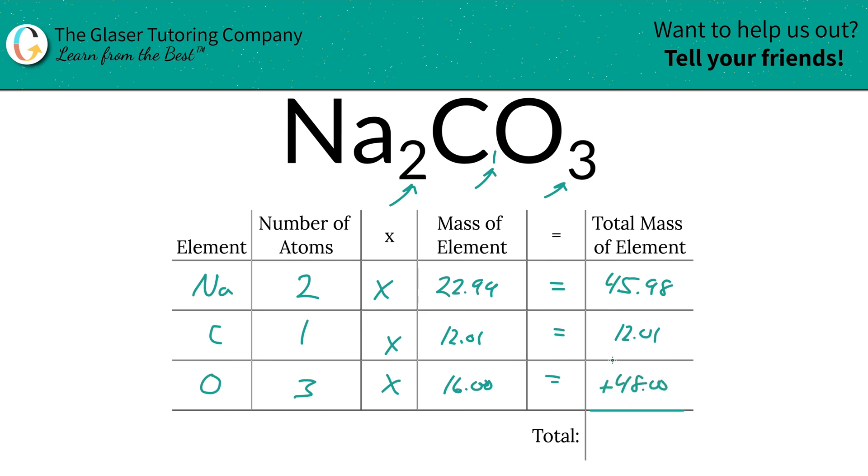And then to find the total mass of the entire compound, just simply add up all of these total masses of each element. So it's going to be 105.99, and the units here are AMU, atomic mass unit. That's because we're finding the molecular mass.